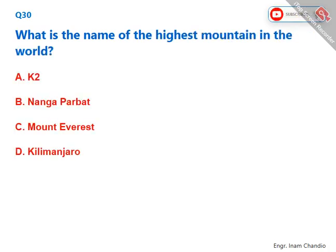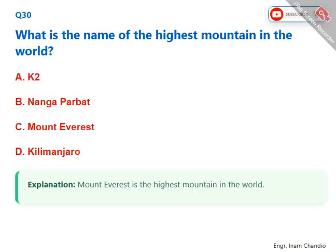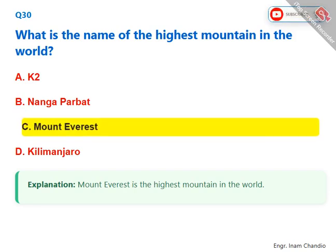What is the name of the highest mountain in the world? Mount Everest is the highest mountain in the world. The correct answer is C. Mount Everest.